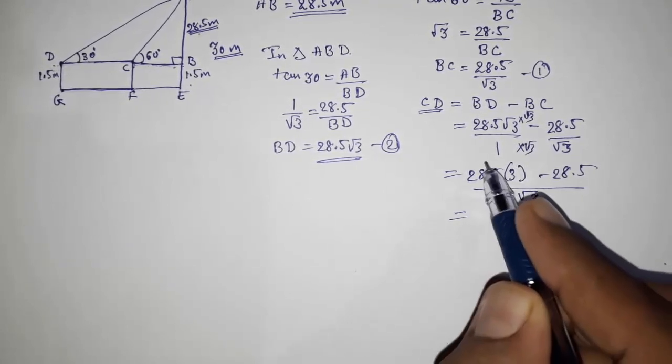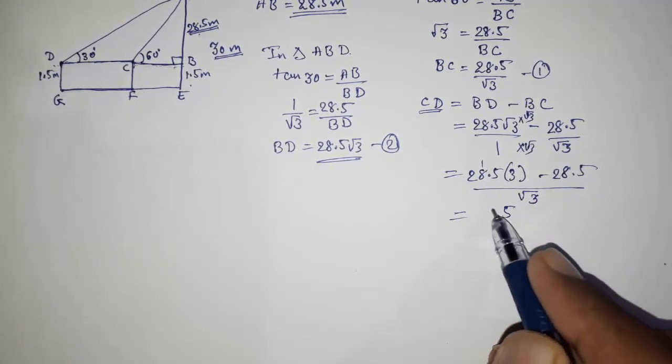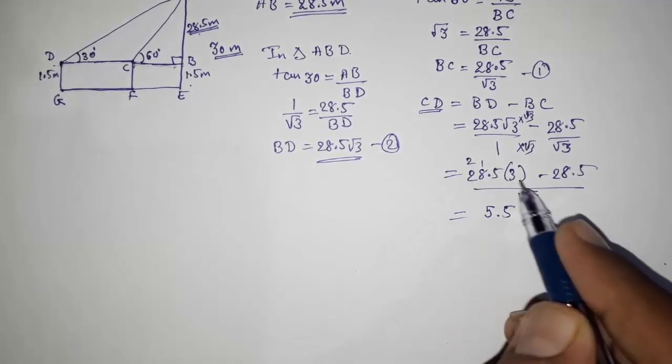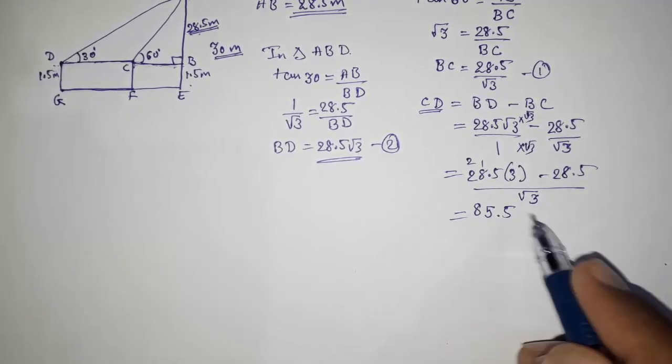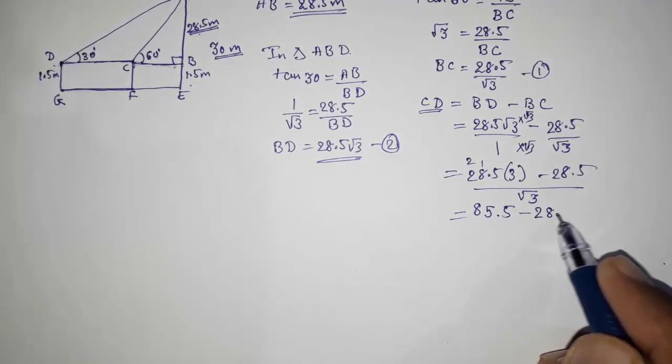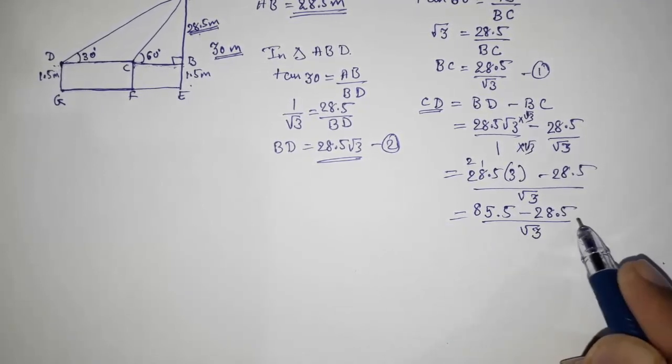So what will happen? 28.5 into 3 minus 28.5 by root 3. So what will happen? 3 times 5 is 15, carry 1, 24, 25, carry 2, 6, 7, 8, 85 minus 28.5 by root 3.